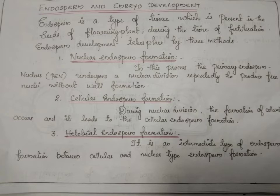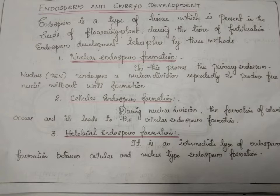The second type is cellular endosperm formation. During nuclear division, cell wall formation occurs, leading to cellular endosperm formation. The number of free nuclei formed before cellularization varies greatly. For example, in coconut, the water is free nuclear endosperm and the surrounding white kernel is cellular endosperm. The watery part is nuclear endosperm and the white part is cellular endosperm.